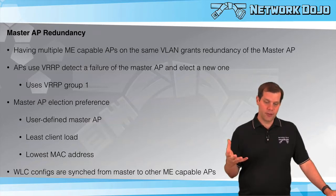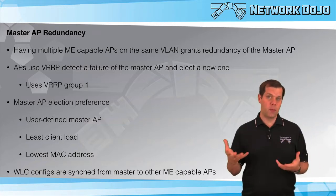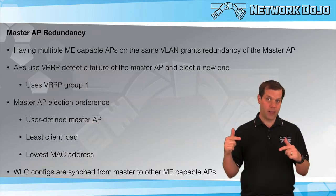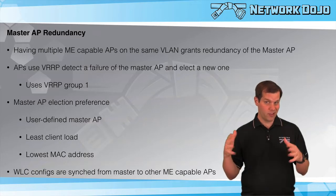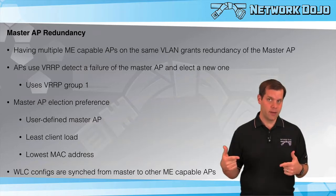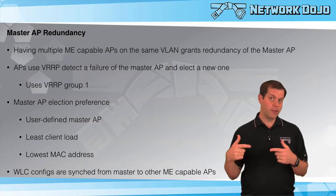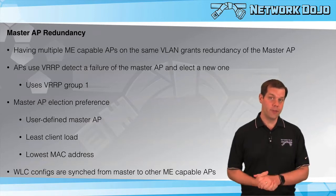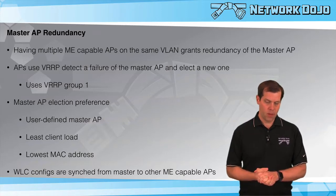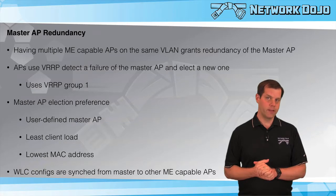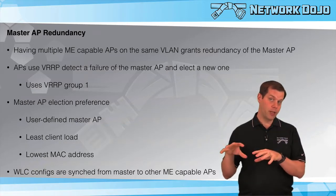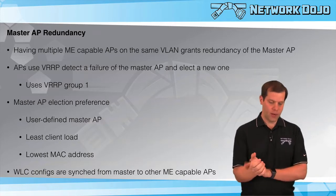When does an election happen? If two Mobility Express capable APs boot up at the same time with no active master AP, they both get to the point of asking: should I be the master AP? That's when an election occurs — they see each other and decide which one should win. Another scenario: if you have three Mobility Express capable APs and one is the master, two are waiting as backups, and the master goes down — those two detect it via VRRP and hold an election.